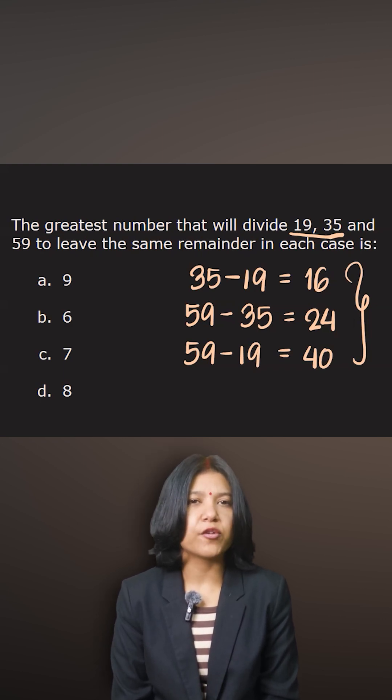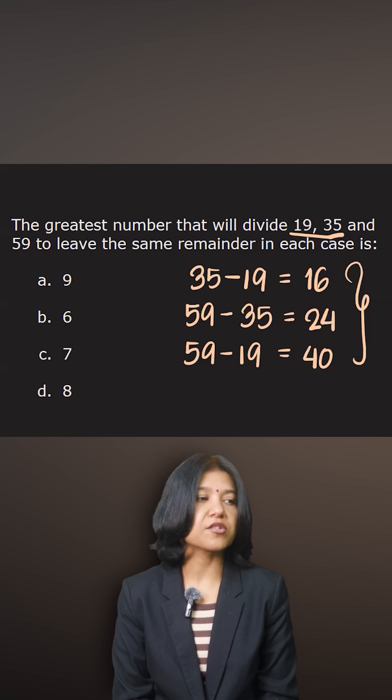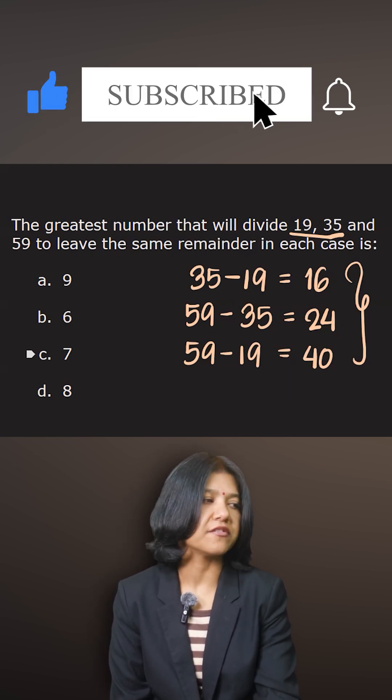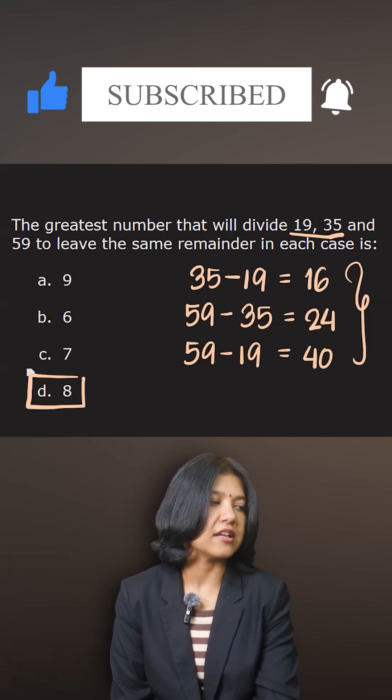So 16, 24, and 40, what's the highest common factor for these numbers? I'm sure you know that already. The answer has to be 8. 8 is the highest number that will divide all of the three differences here. Hence the answer is 8.